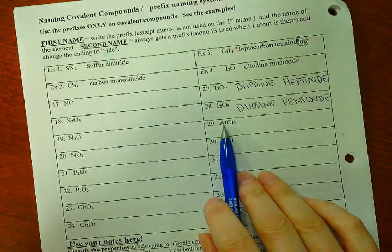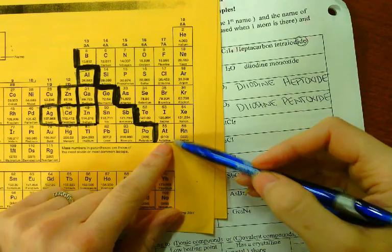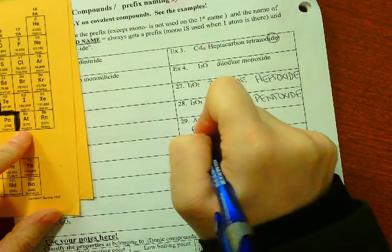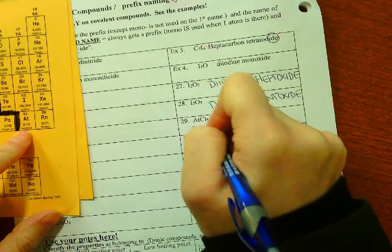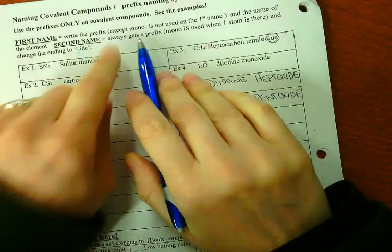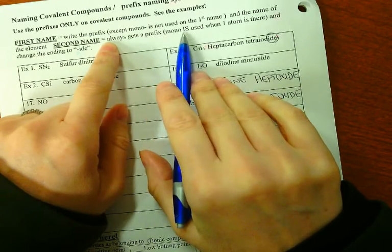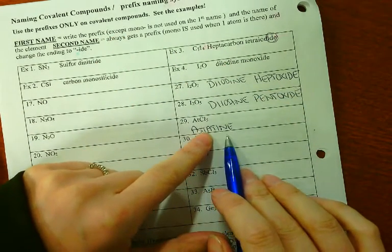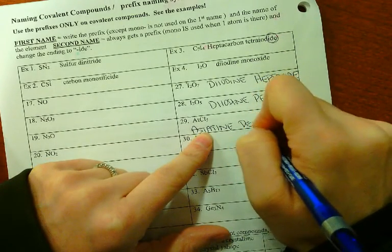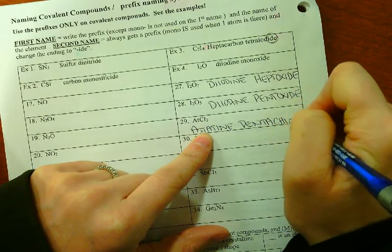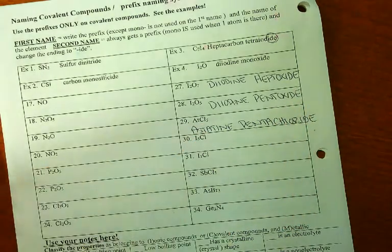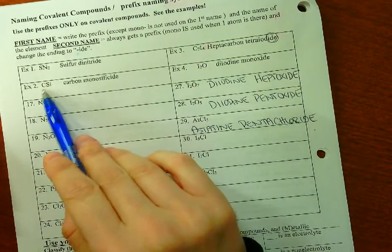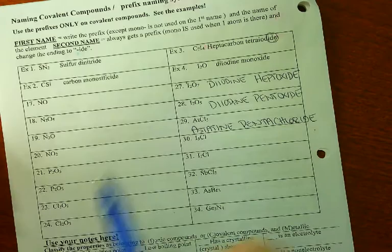Number 29, if I didn't have every other student ask me where At was. It's astatine, a halogen down here. There's only one of them. The second name always gets a prefix, but mono on the first name is not used. So I would just say astatine, not monoastatine. Then pentachloride. You never say mono on the beginning of a name. Example 2: one carbon, one silicon. You don't say monocarbon monosilicide. You say carbon monosilicide.